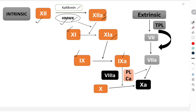Factor 11A then activates factor 9, giving factor 9A. Factor 9A causes conversion of factor 10 into factor 10A. For this to occur, we need activated factor 8, the presence of phospholipids, and calcium. Activation of factor 8 occurs when it dissociates from von Willebrand factor.